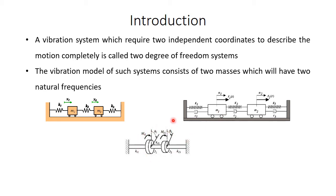In total, we can say this is a damped forced 2 degree of freedom system. This is another example for a 2 degree of freedom system in which two rotors are attached to a shaft — a two rotor system. In this system, instead of giving a linear displacement, we are giving angular displacement theta 1 and theta 2 for rotors 1 and 2.